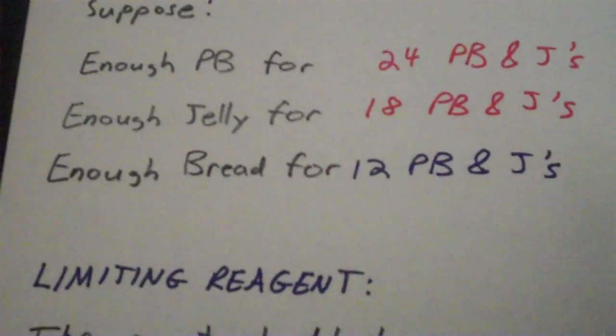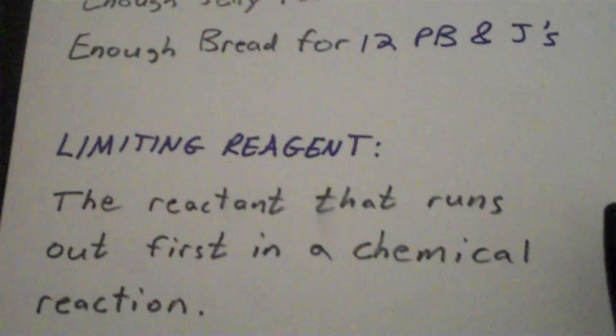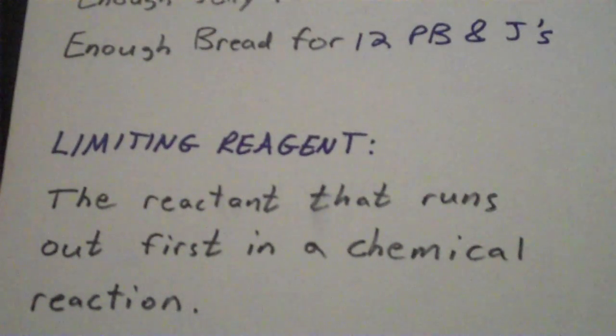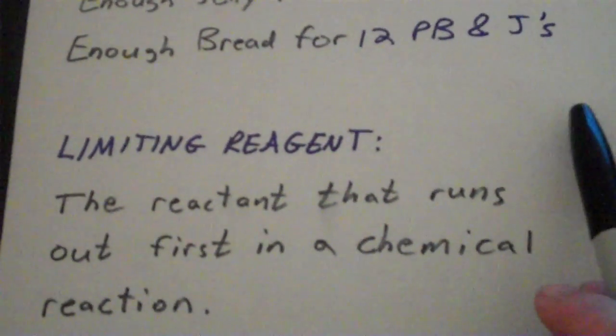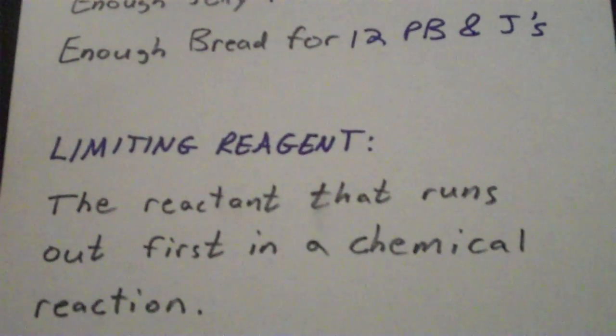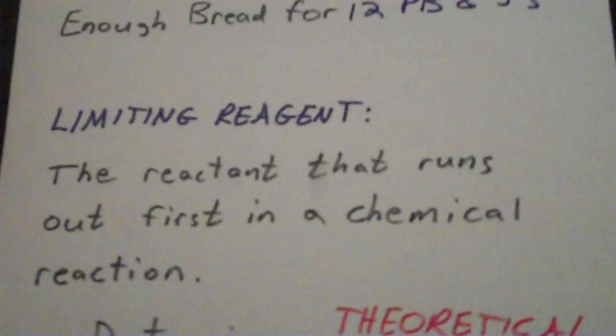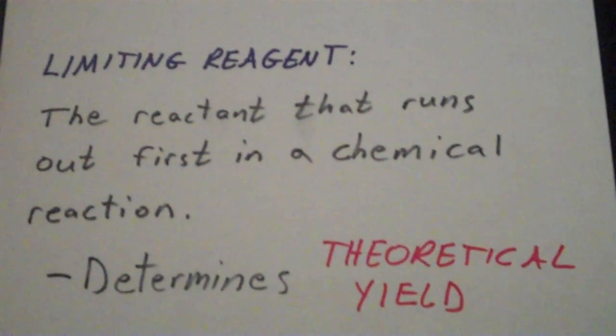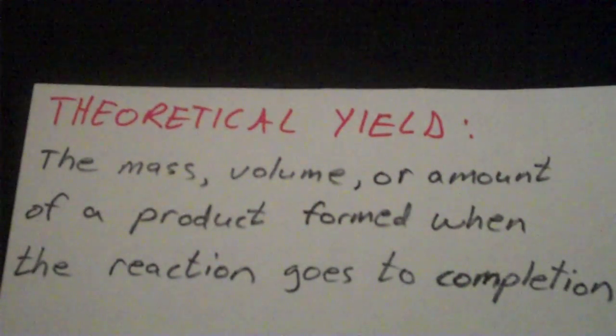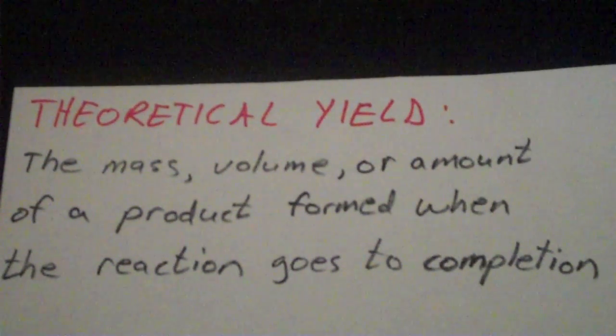Chemical reactions work in a very similar fashion. The limiting reagent in a chemical reaction is the reactant that runs out first. So that doesn't mean it's the reactant that you have less of. It just means it's the reactant that runs out first if you want to complete the reaction. The limiting reagent determines what we call a theoretical yield. And a theoretical yield is simply the mass, volume, or amount of a product formed when the reaction goes to completion.